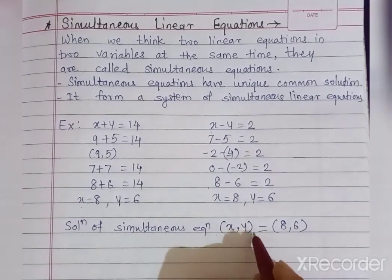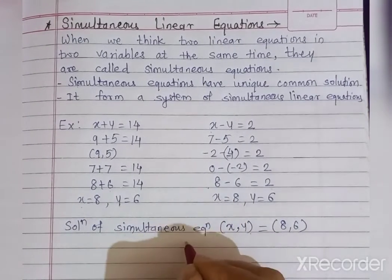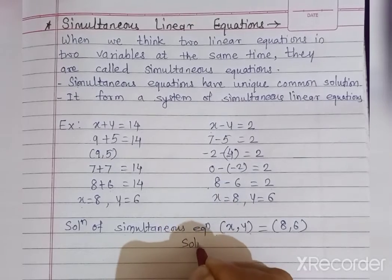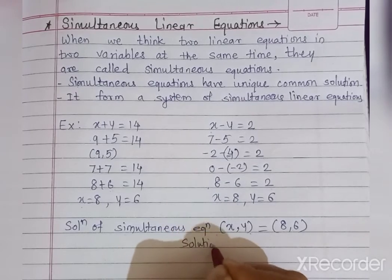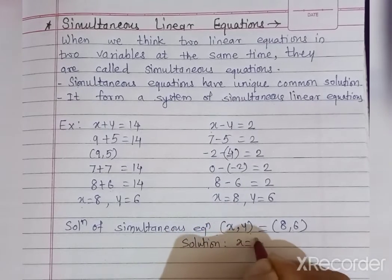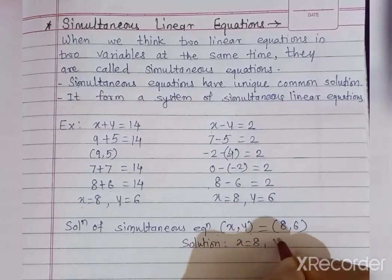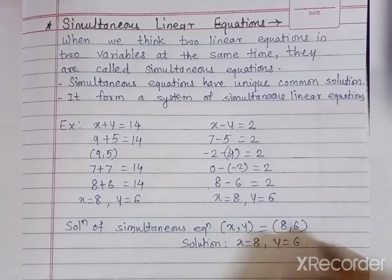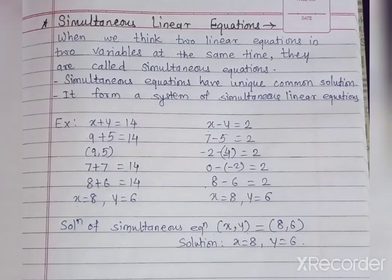So simultaneous equations have a unique common solution — only one common solution exists. But for a single linear equation there are infinitely many solutions. The solution here is x equals 8 and y equals 6. Thank you students.